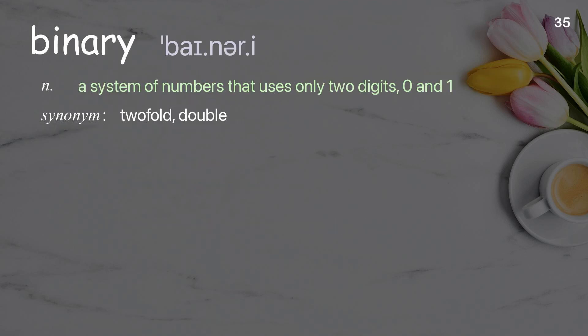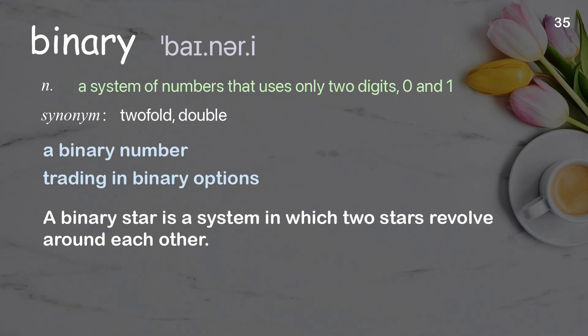Binary: Examples: Trading in binary options. A binary star is a system in which two stars revolve around each other.